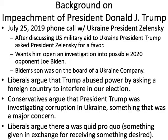Liberals argue that this moment — where President Trump leveraged military aid against President Zelensky in order to get him to investigate Joe Biden — is when he abused power and committed an impeachable act. They argued that he essentially asked a foreign country to interfere in our election, to dig up dirt on a political opponent he'd be running against in a general election. Conservatives argued that President Trump was investigating corruption in Ukraine, something that was a major concern, and that this is a normal thing that happens in diplomacy.